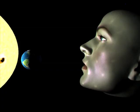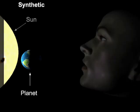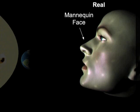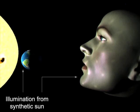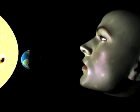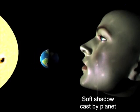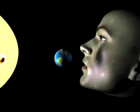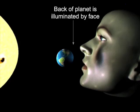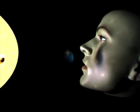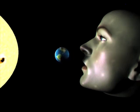Our last example shows soft shadows and diffuse-diffuse interactions for a scene consisting of a synthetic sun and planet and a real mannequin face. Both the planet and the face are illuminated only by the synthetic sun. The planet obscures the sun's illumination of the face, casting a soft shadow that becomes more defined as it approaches. Diffusely reflected light from the face illuminates the backside of the planet. We briefly observe the planet illuminated only by the light reflected from the face. The shadow falls on the contours of the face, pronouncing its structure and spatial relationship to the planet.